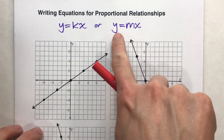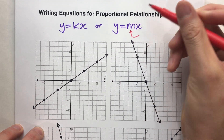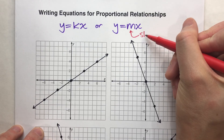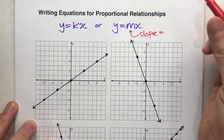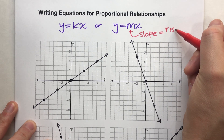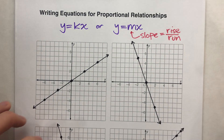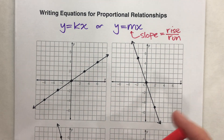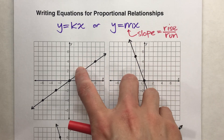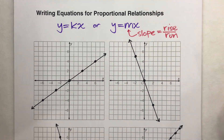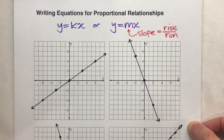When it's written as y equals mx, the m stands for the slope, which on a graph is the rise over the run. That method is a little bit easier to work with when we're going from a graph to an equation. Let's see a couple of examples.